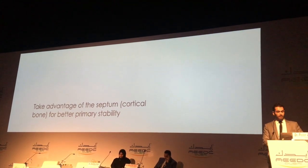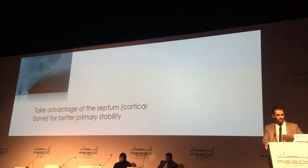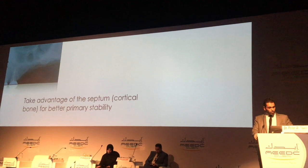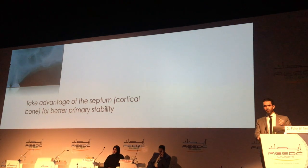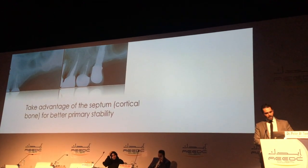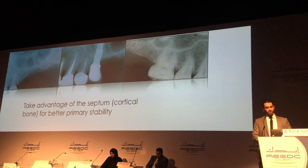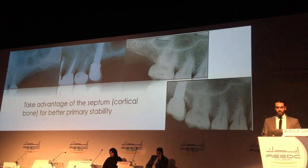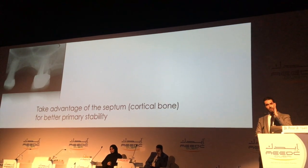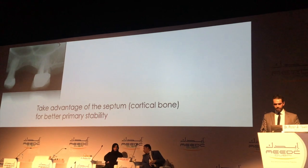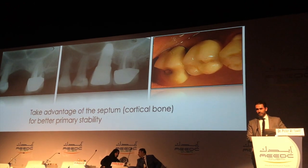Another trick is to take advantage of the septum. When you have a multiloculated sinus with septa, it is very useful to use the septum itself — these are cortical bones and you can anchor the implant with proper torque. Take advantage of the septum: here we can use a regular length and diameter and restore the patient with a single crown. You just have to aim right and hit it properly. This is the result a couple of years later.